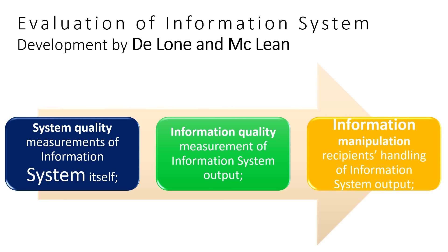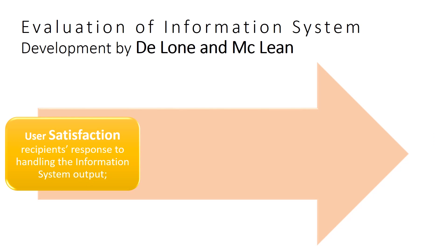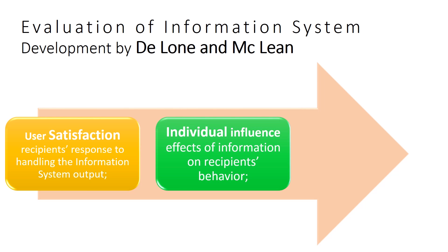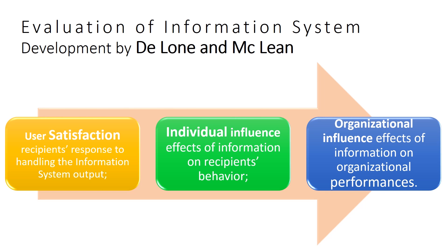Information Manipulation category included recipients' handling of information system output. User Satisfaction included recipients' response to handling the information system output. Individual Influence checked the effects of the information system on recipients' behavior. And lastly, Organizational Influence checked the effects of information on organizational performances.